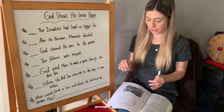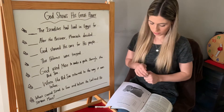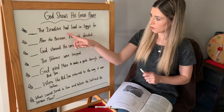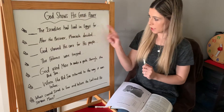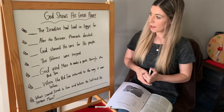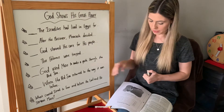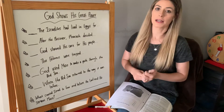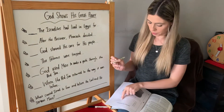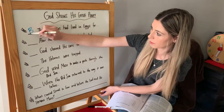Our sentences need to make sense, but it also needs to be the correct answer. The first one: the Israelites had lived in Egypt for... That one should easily make sense because there's only one answer that has a number of years, and that's B, 430 years. So our answer on the first line is B.